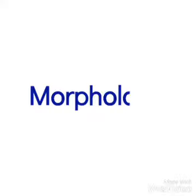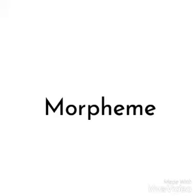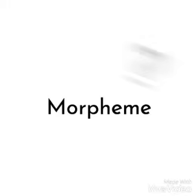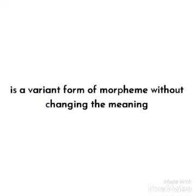In Morphology, there is Morpheme. Morpheme is the smallest unit of words. But I'm not going to talk about Morpheme. Here, I'm going to talk about the sub-part of Morpheme — it is Allomorph. Allomorph is a variant form of a Morpheme without changing the meaning.